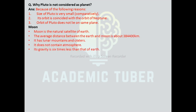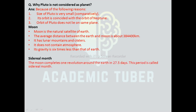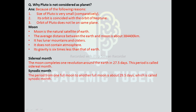Moon: the Moon is the natural satellite of Earth, and the average distance between the Earth and Moon is about 384,400 kilometers. It has lunar mountains and craters, and it does not contain an atmosphere. Its gravity is six times less than that of the Earth. Sidereal month: the Moon completes one revolution around the Earth in 27.5 days, and this period is called the sidereal month. Synodic month: the period from one full moon to another full moon is about 29.5 days, which is called the synodic month.